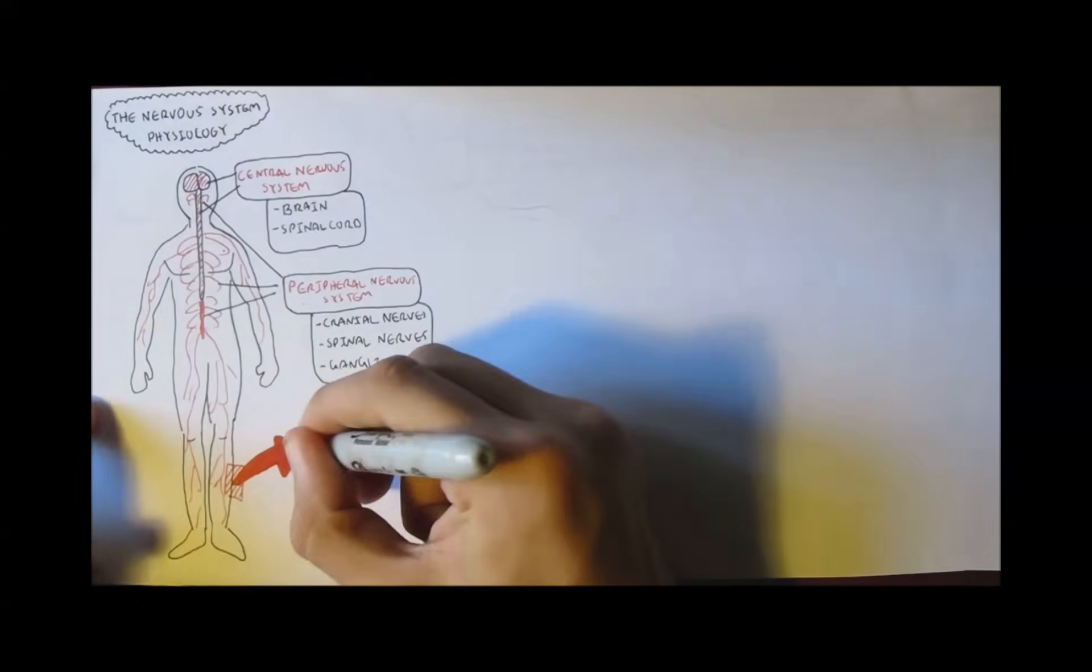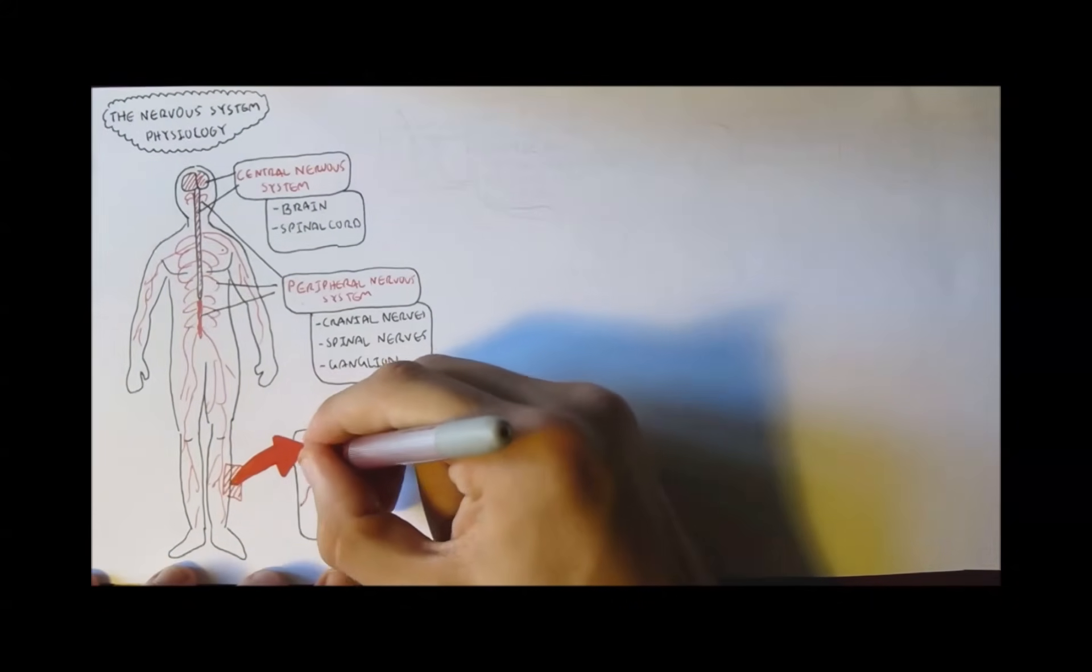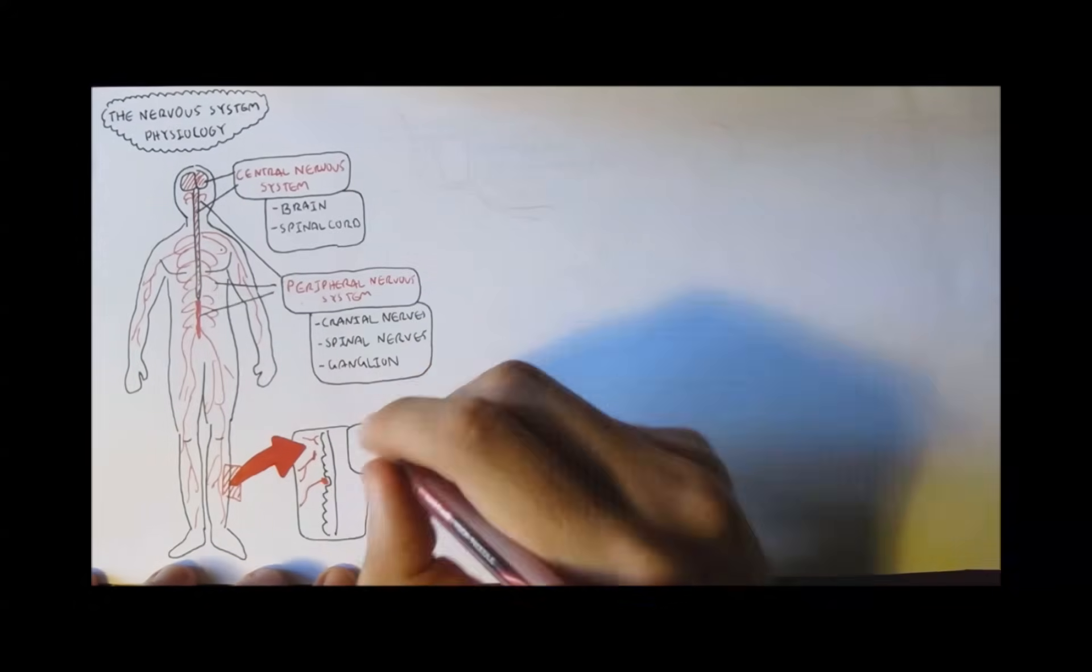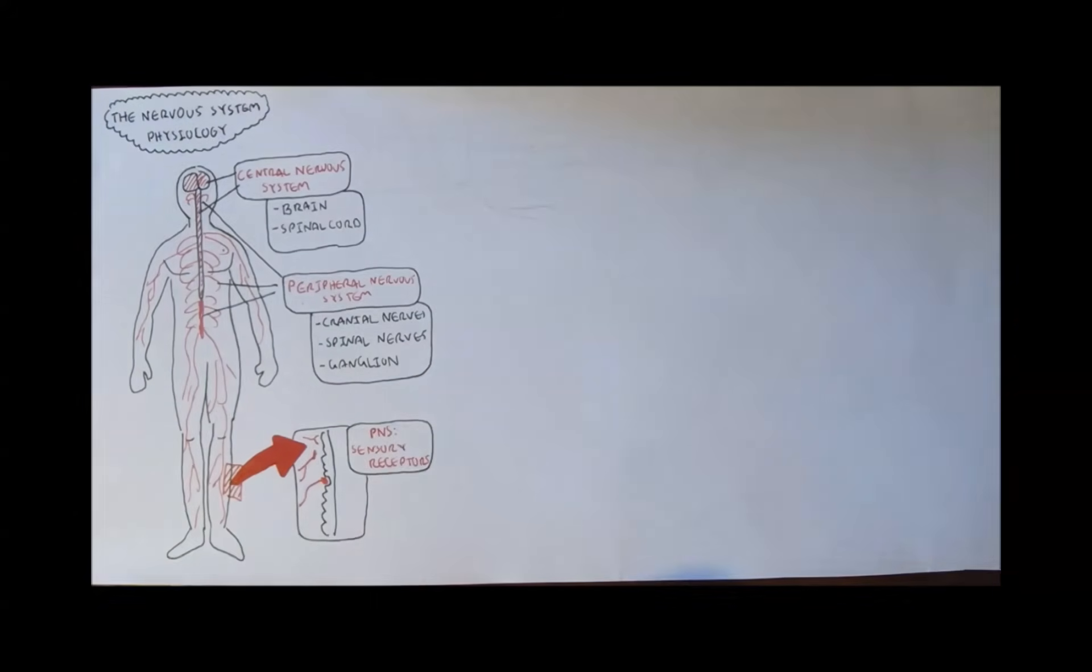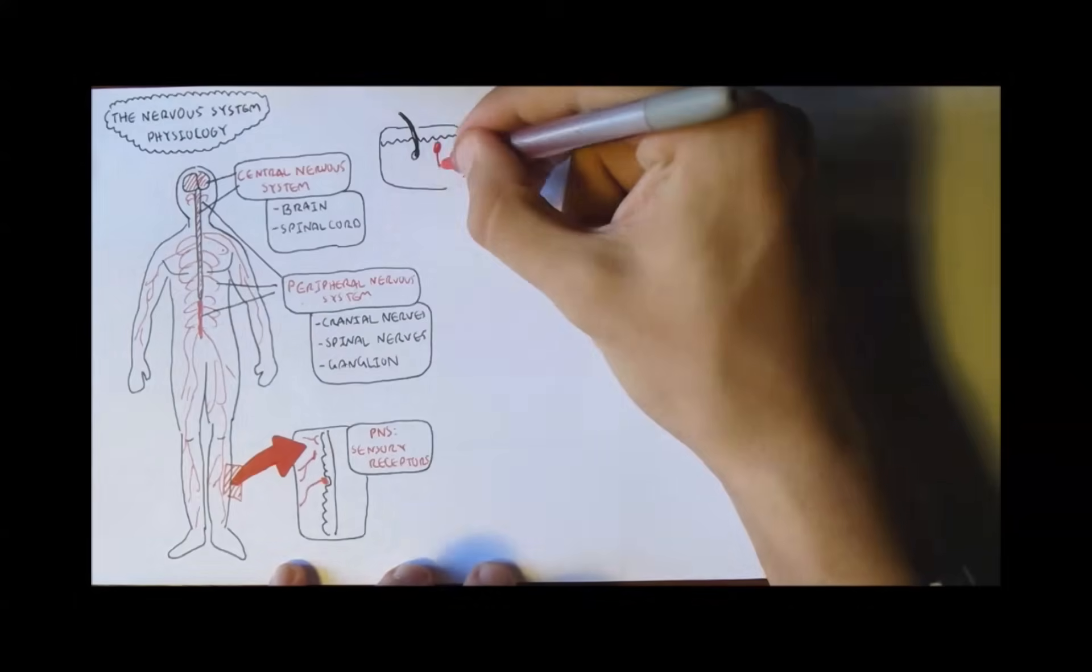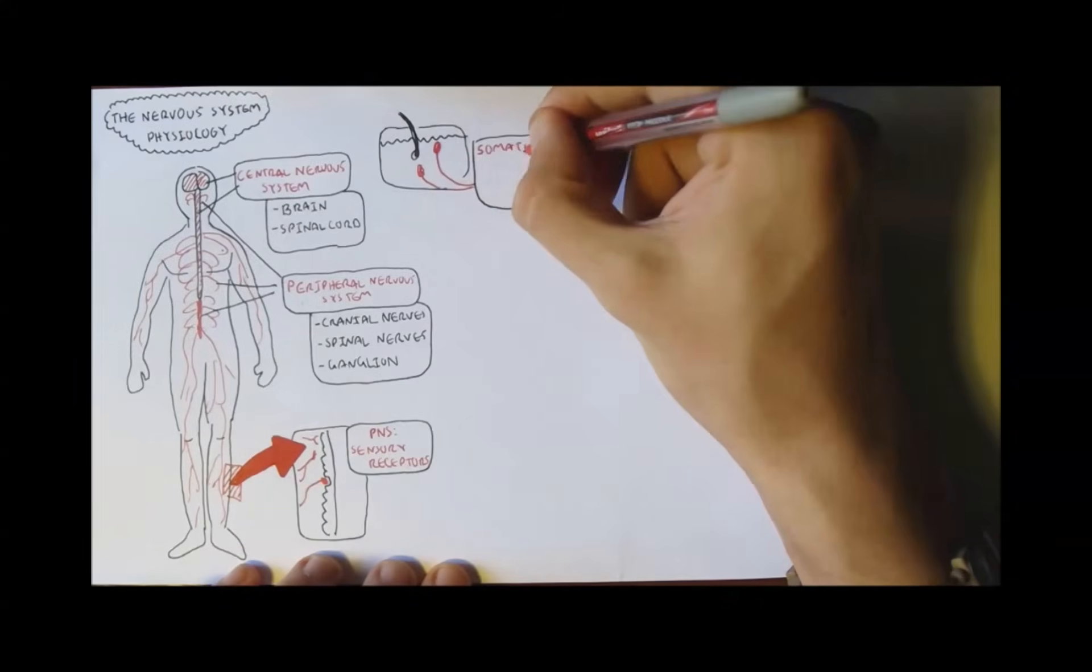The nerve receptors under your skin are also part of the peripheral system and they are sensory receptors. Let's look at a quick diagram to see how the peripheral nervous system works. This might be confusing but it should be okay.